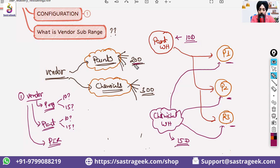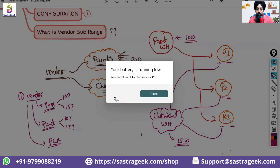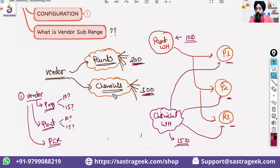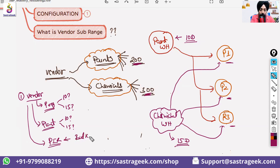These 200 materials need to come in 10 days and these 300 materials need to come in 15 days. But that means I need to maintain 500 entries. You can maintain it at the PIR level, but it becomes bulk entries that you need to maintain.